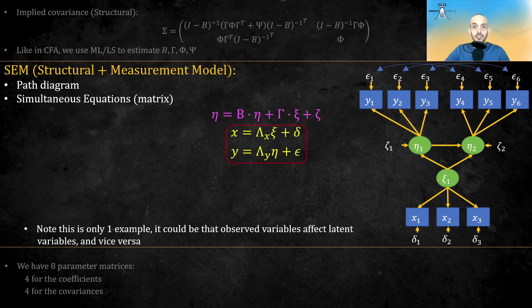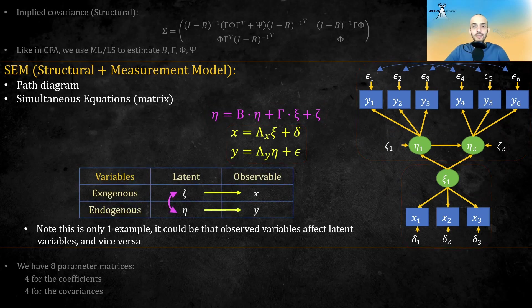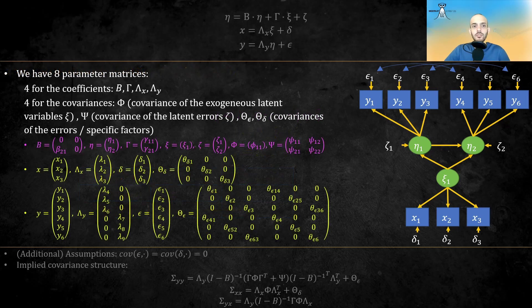In addition to the structural model, we have a measurement model where the latent variables are manifested by the observed variables. Note that now we have two distinctions between variables, exogenous versus endogenous and latent versus observable. Also note that this is just a simplified example of SEM. It could also be that in the structural model, observed variables affect latent variables, and vice versa.